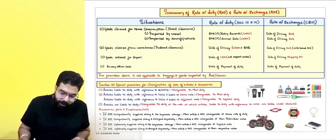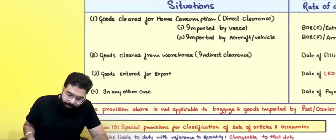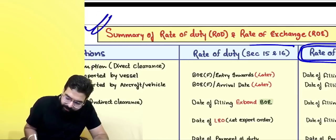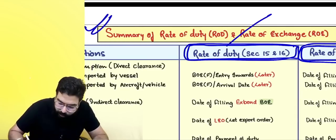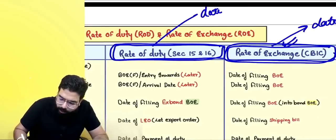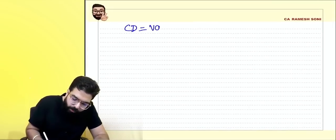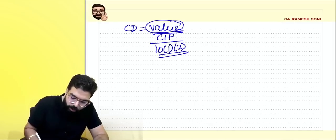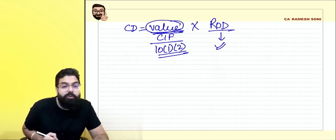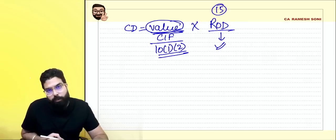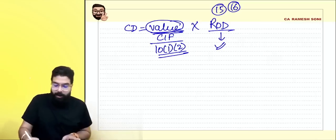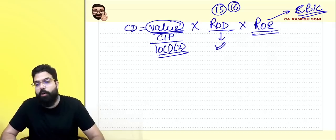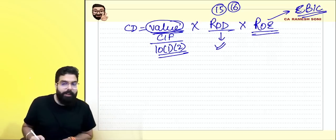Additional points: any duties and taxes incurred in India are never included. Service charges of a channelizing agent — this is not a buying commission — must always be included. Demurrage charges for delay in clearing from the port are not to be included. There are two types of demurrage: ship demurrage charges, which are includable as part of cost of transportation, and Indian port demurrage charges for goods lying at the Indian port, which are never included.